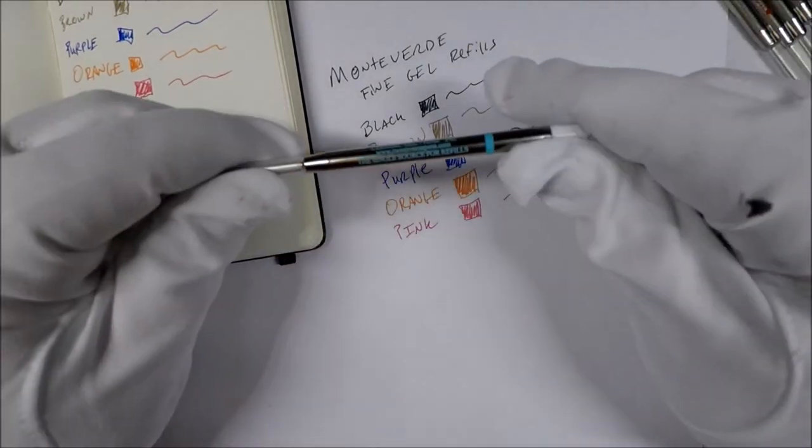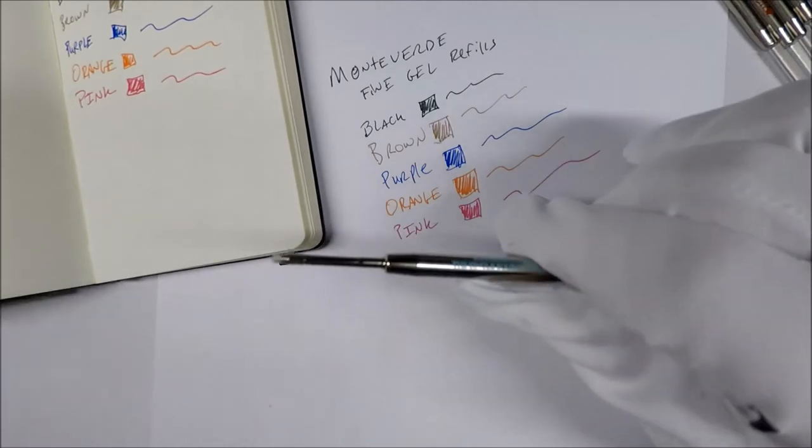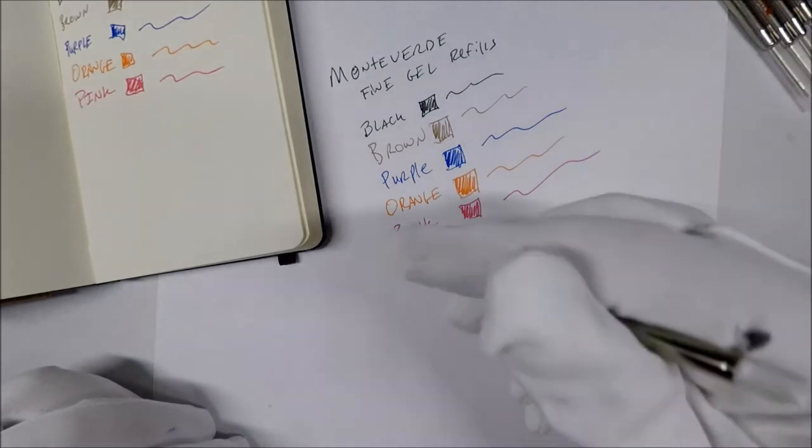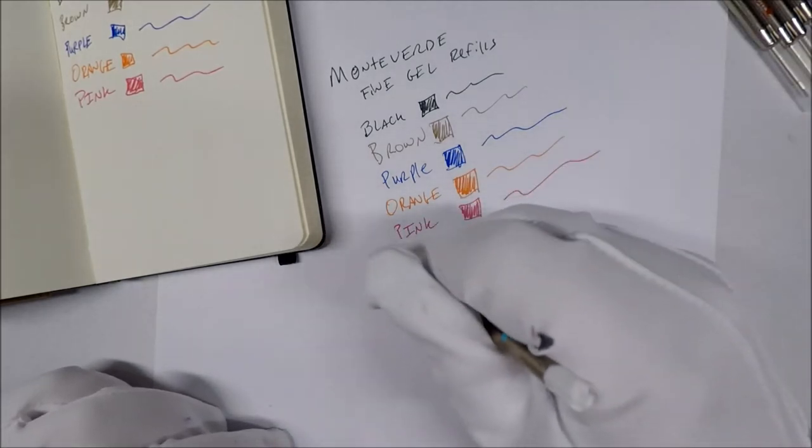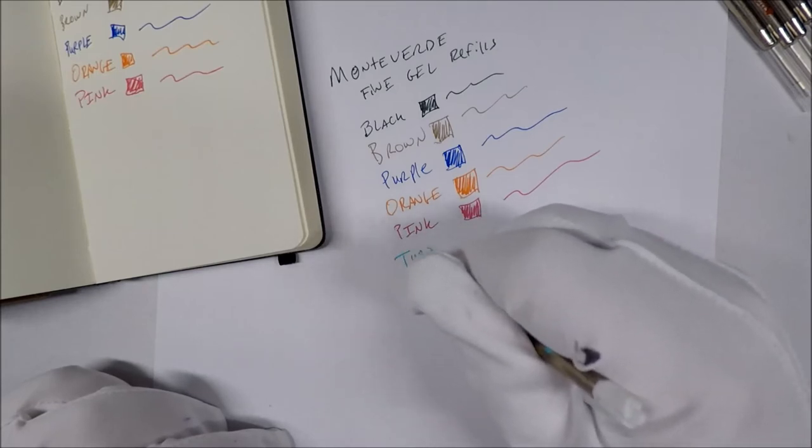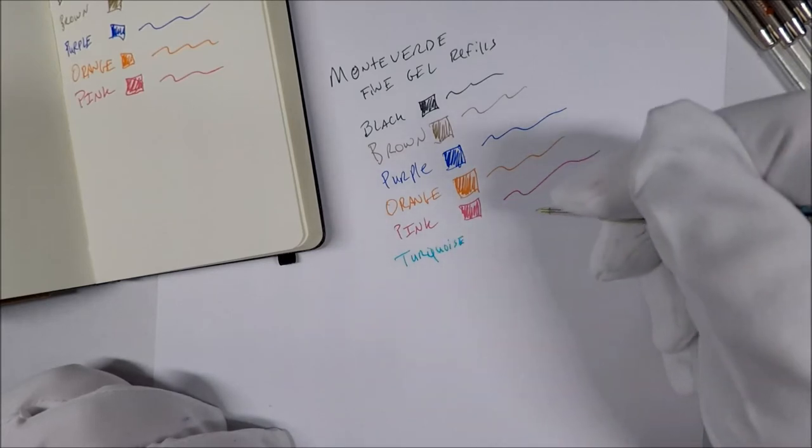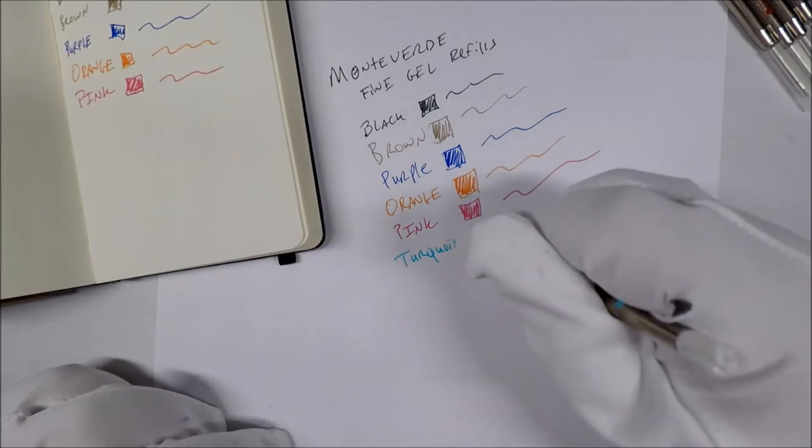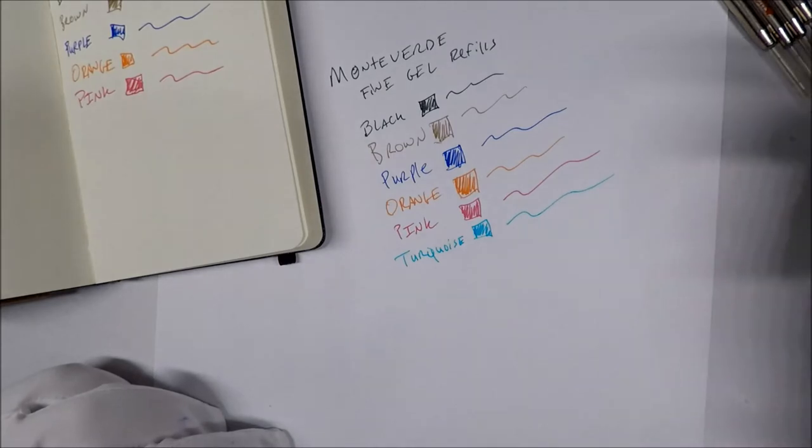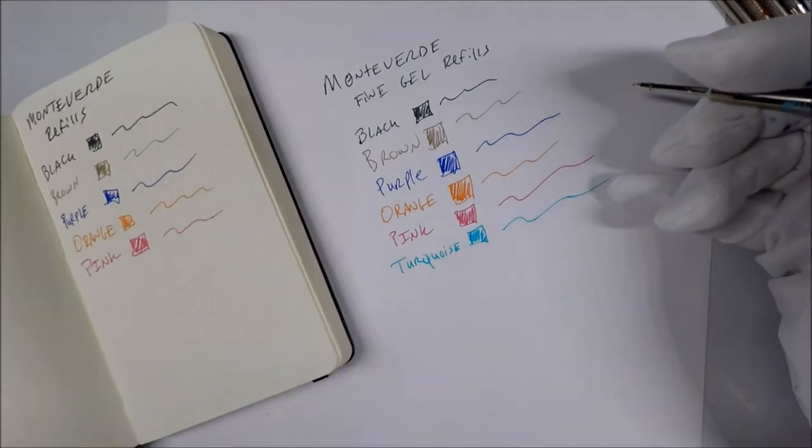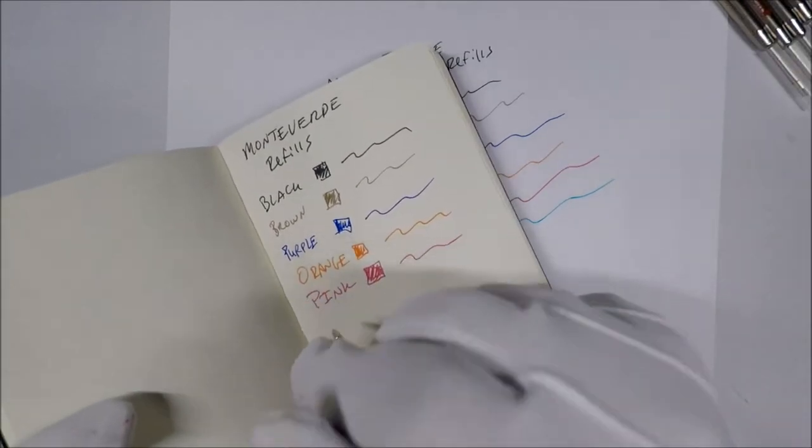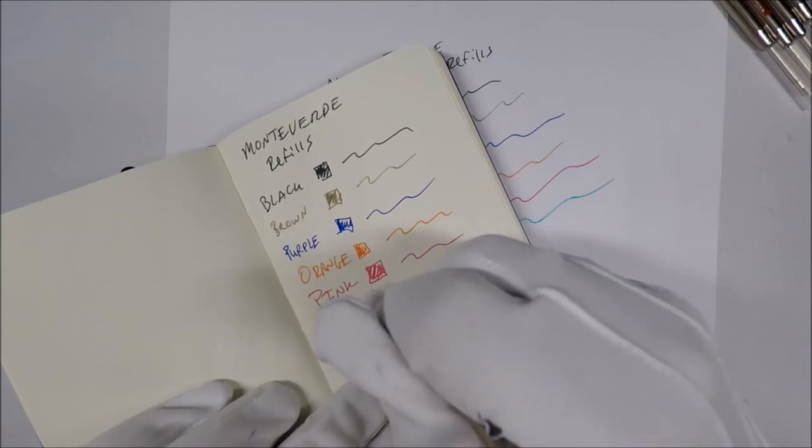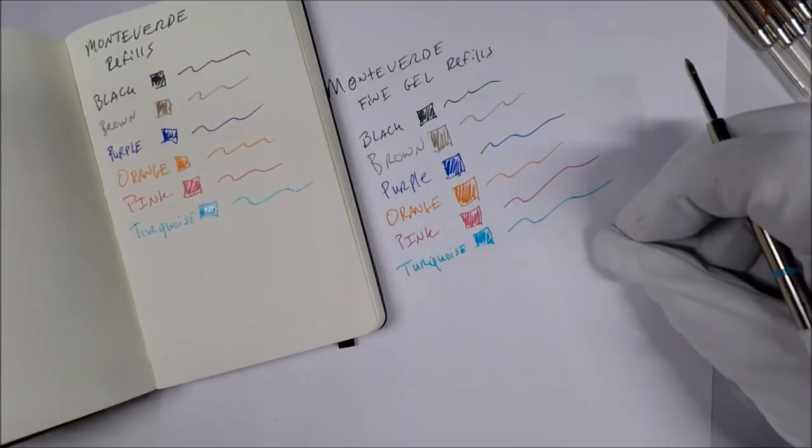Now we have turquoise, and I'm excited to see this one too. Because I don't want to embarrass myself and misspell turquoise on film. T-U-R-Q-U-O-I-S-E. Turquoise. Did I spell that one right? T-U-R-Q-U-O-I-S-E. Okay, there we go. And the turquoise, it's a pretty good color actually, I like it. T-U-R-Q-U-O-I-S-E. So turquoise looks pretty good.